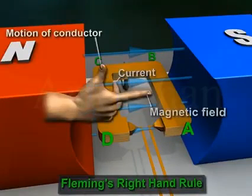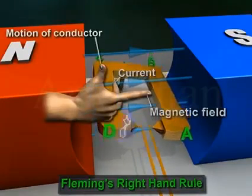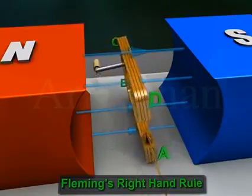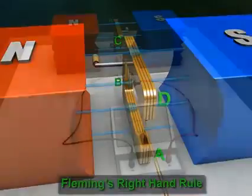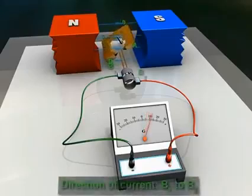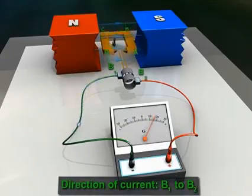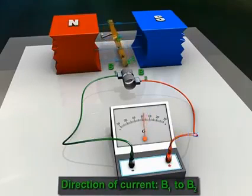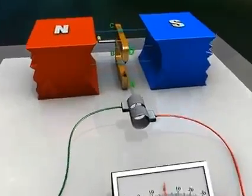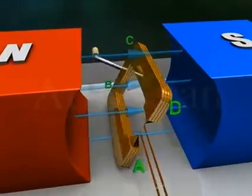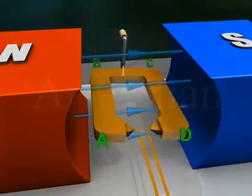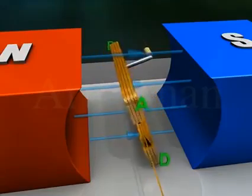the current will flow in the direction DCBA. So the current will flow from B1 to B2 through the galvanometer.